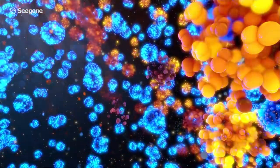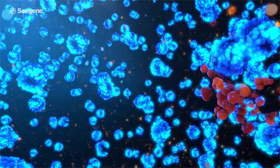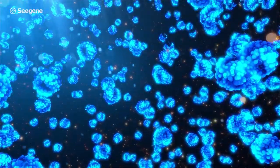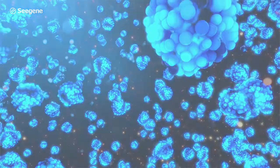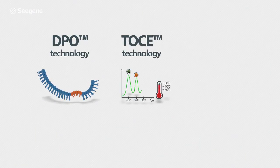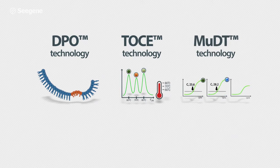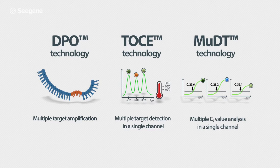MUDT converts the subtracted fluorescent signal for FLU-A into a CT value. In conclusion, MUDT technology, combined with the advantages of DPO and TOS, enables the measurement of target CT values by analyzing fluorescent signals collected at different detection temperatures.